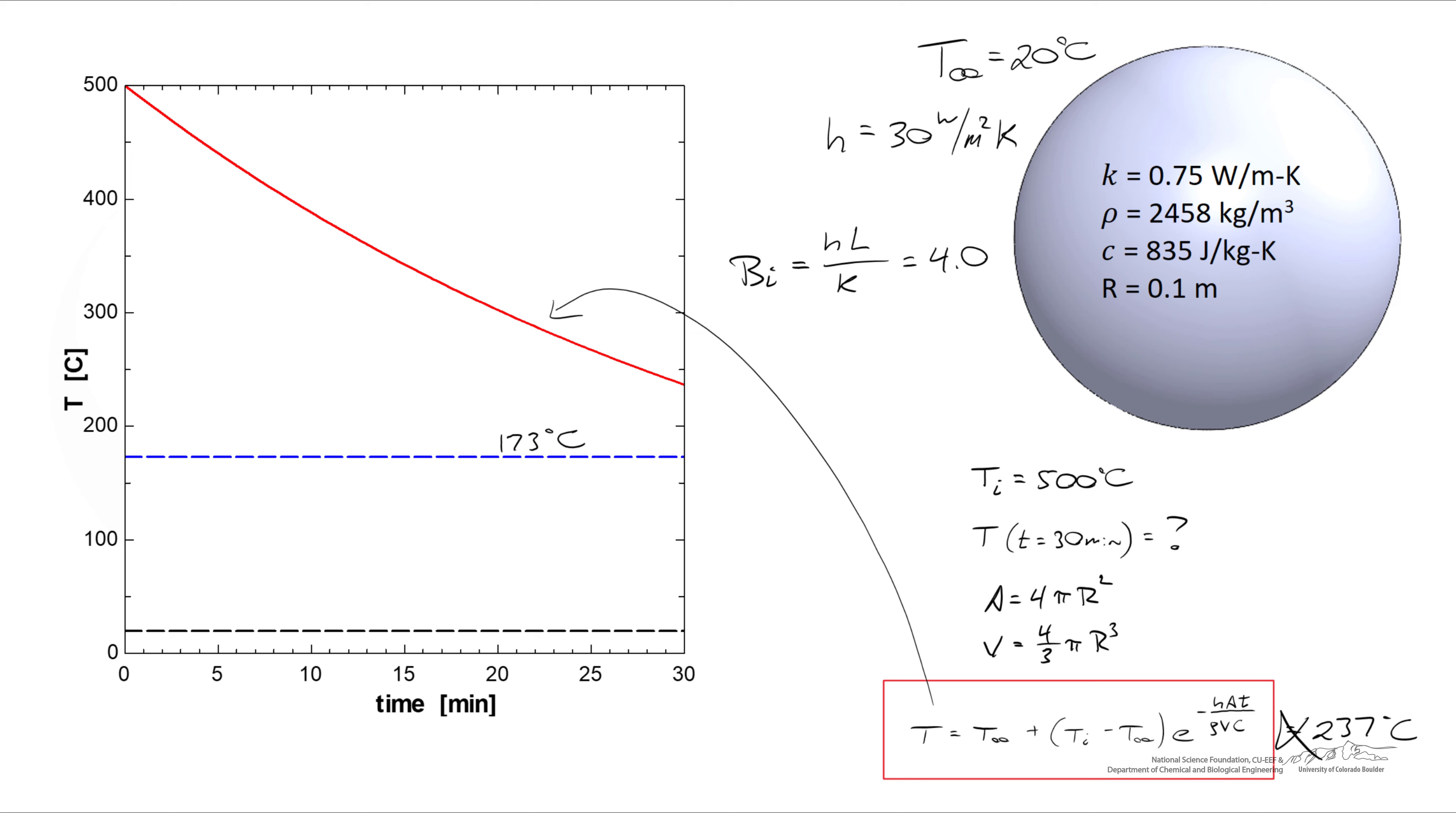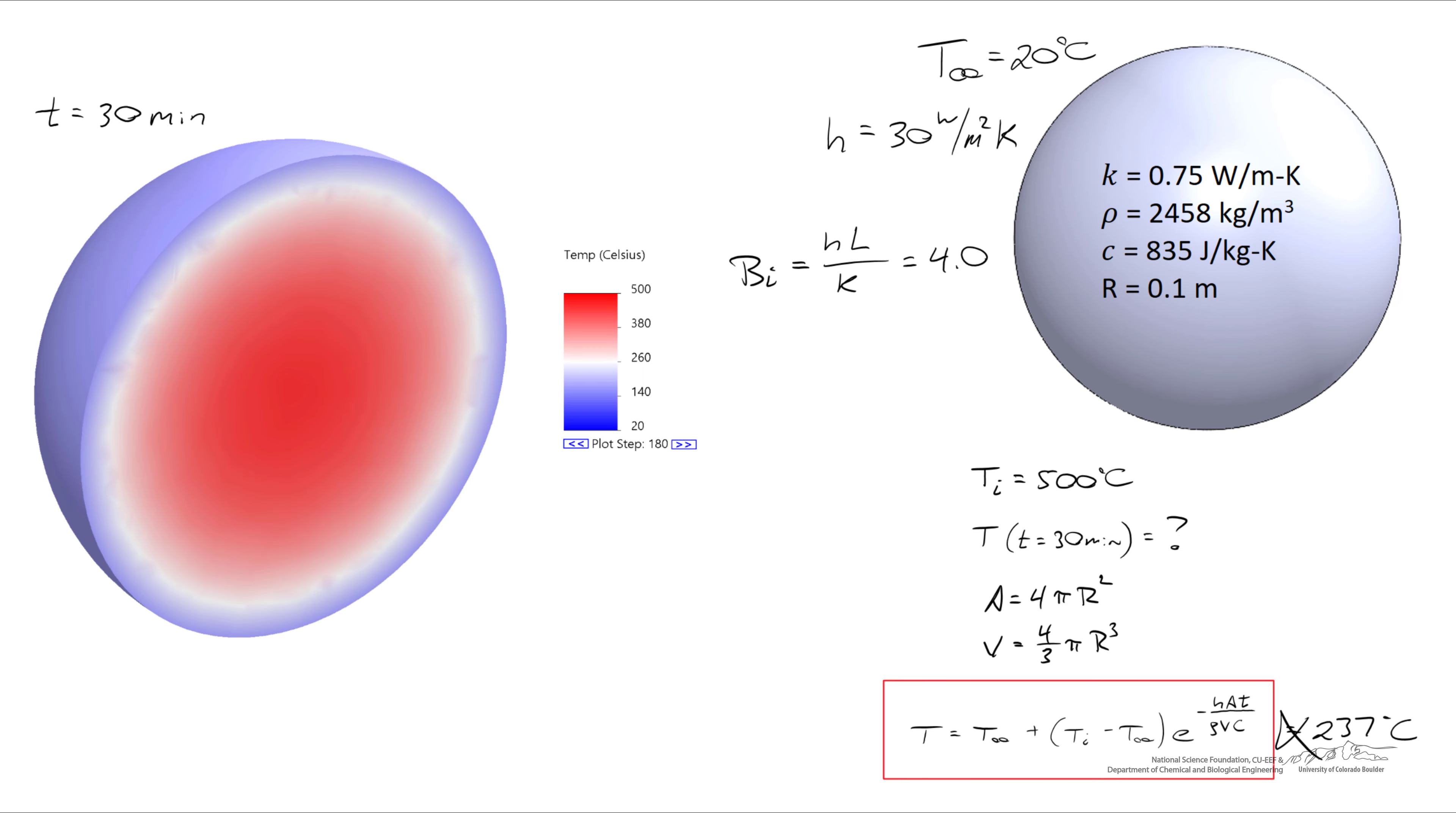Note that by using lump capacitance we've dramatically overestimated the temperature of the surface of the sphere. Once we take a cross-section of the simulation, it's a little bit more obvious what's going on. At the center of the sphere we have a temperature that's almost 500 degrees, whereas on the exterior the temperature is only about 170 degrees.